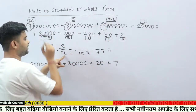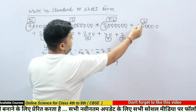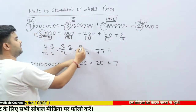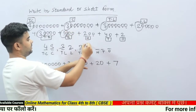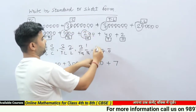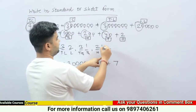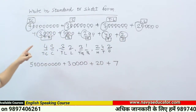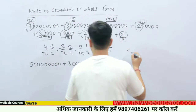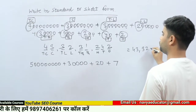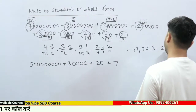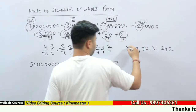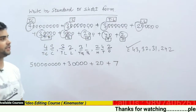Lakh: 2. Ten thousands: 3. Thousands: 1. Hundreds: 2. Tens: 4. Ones: 2. So the answer is 4, 3, 3, 2, 3, 1, 2, 4, 2. This is the standard or short form of the given expanded form.